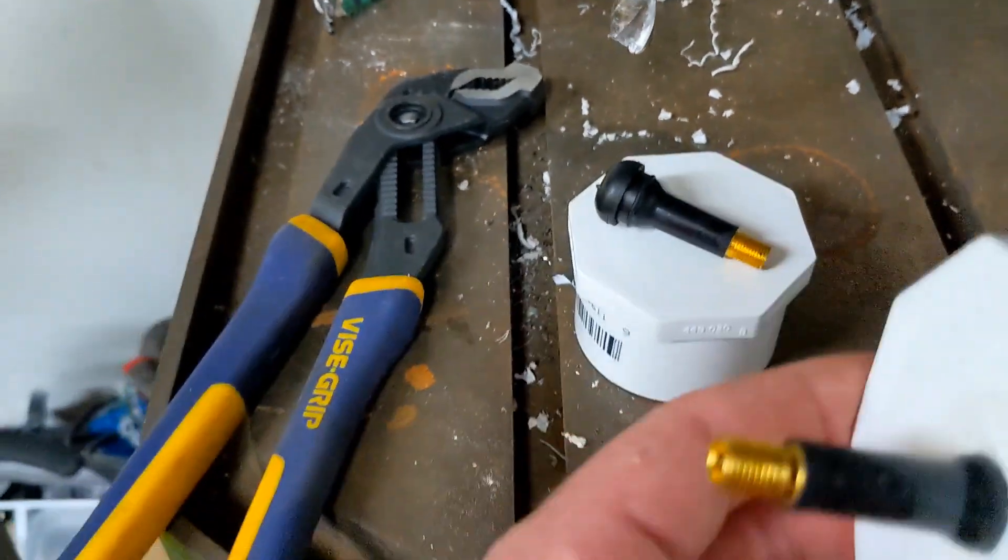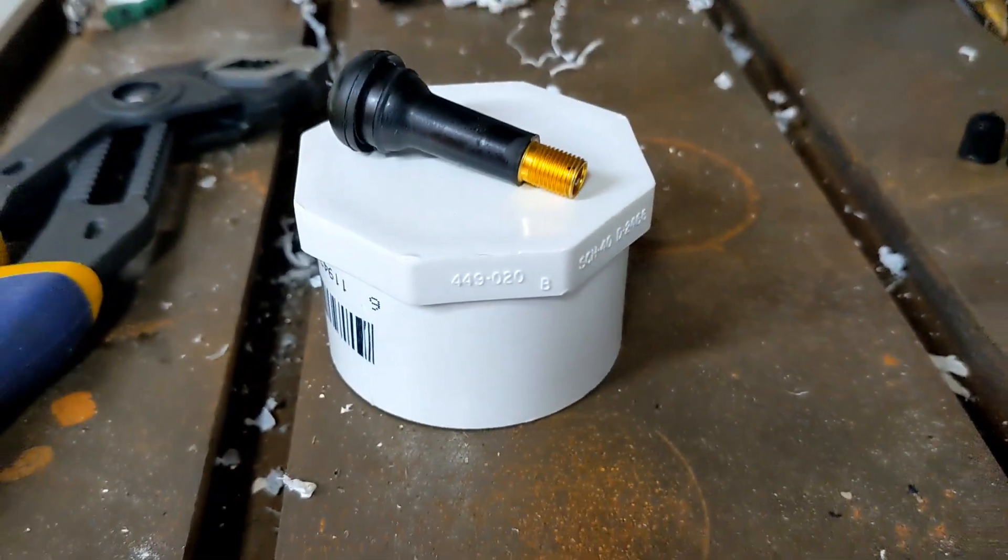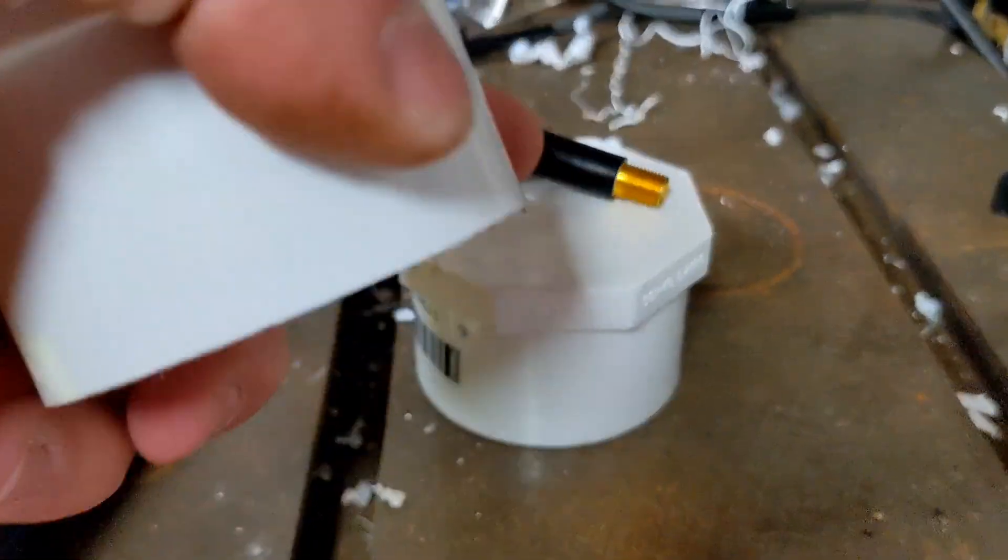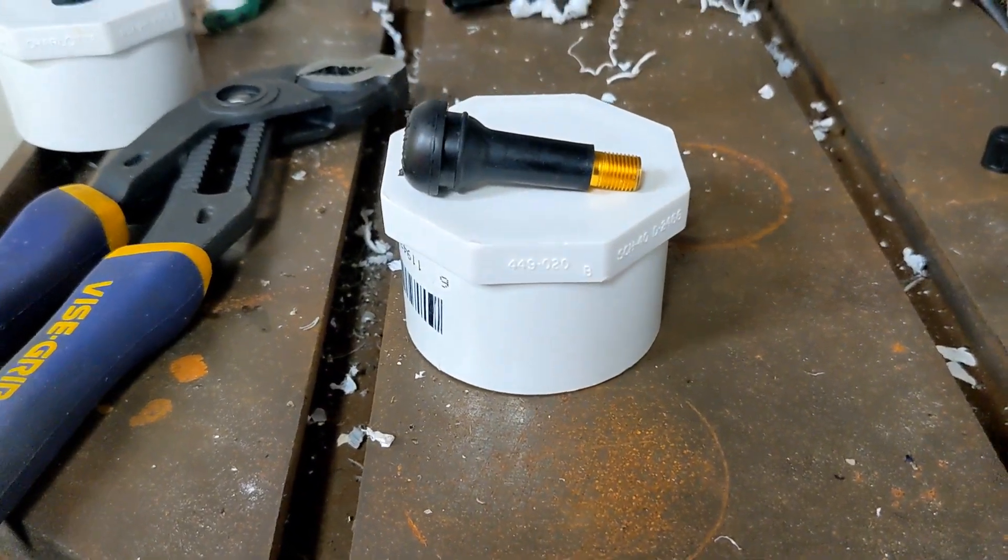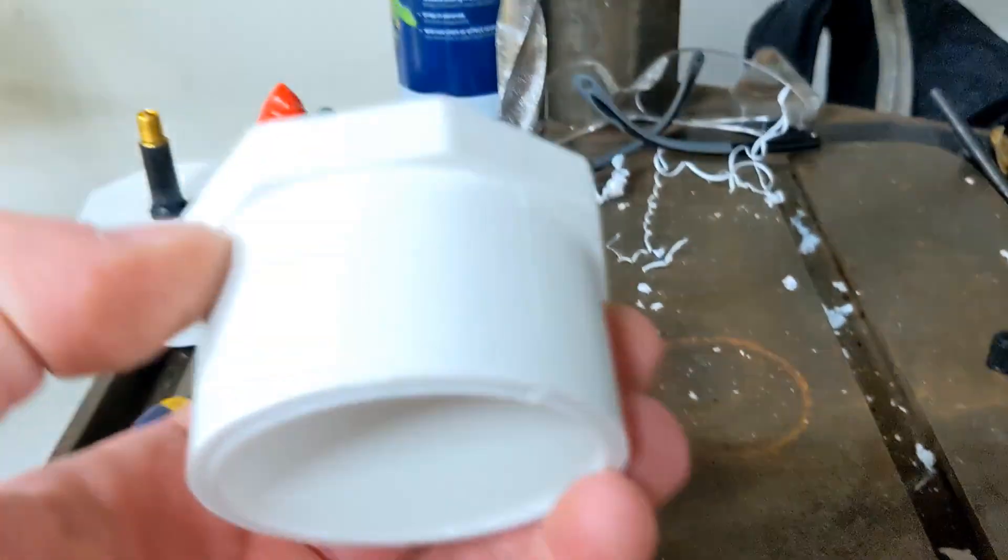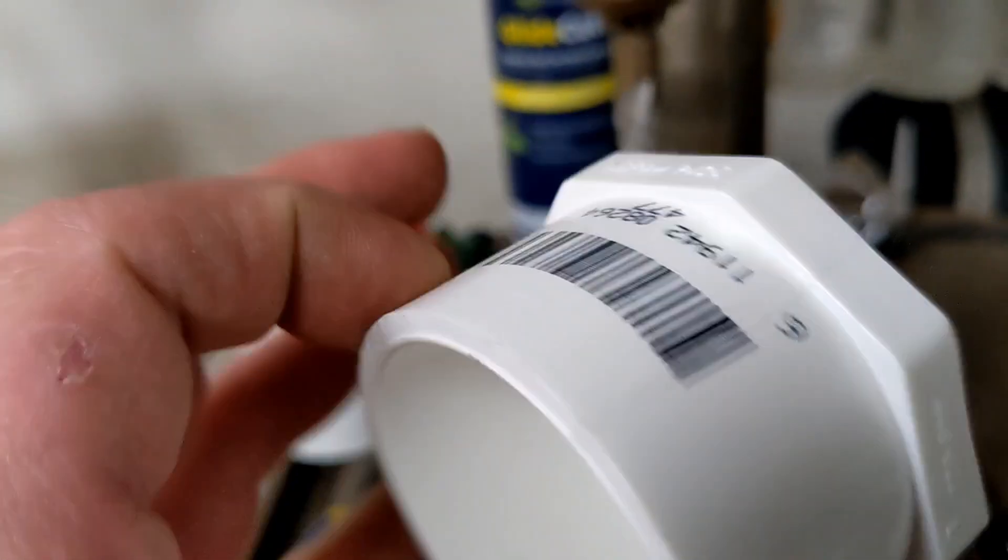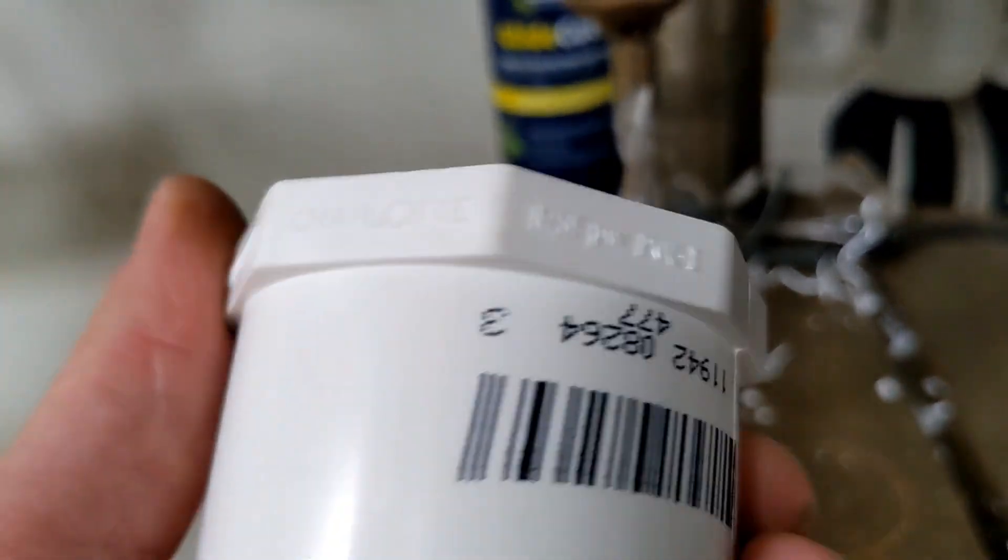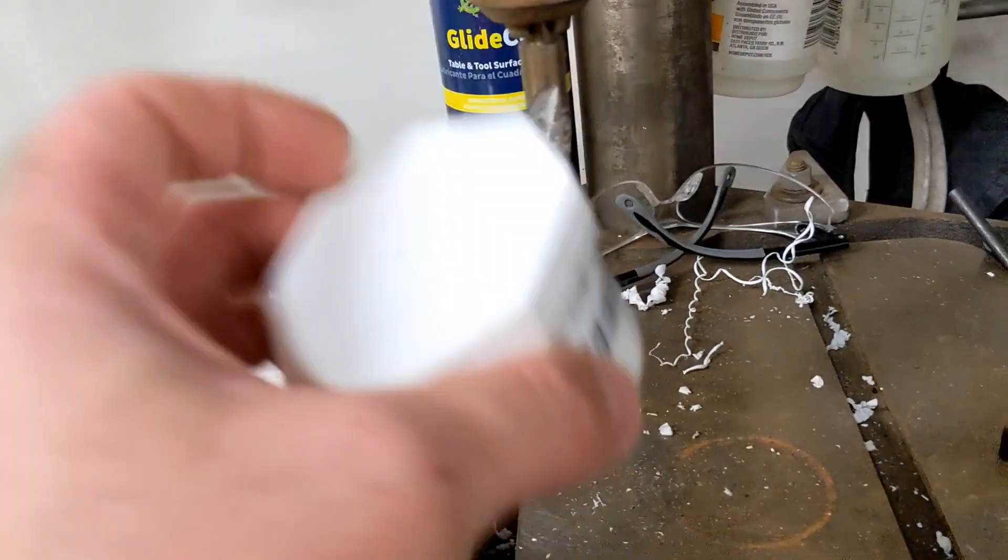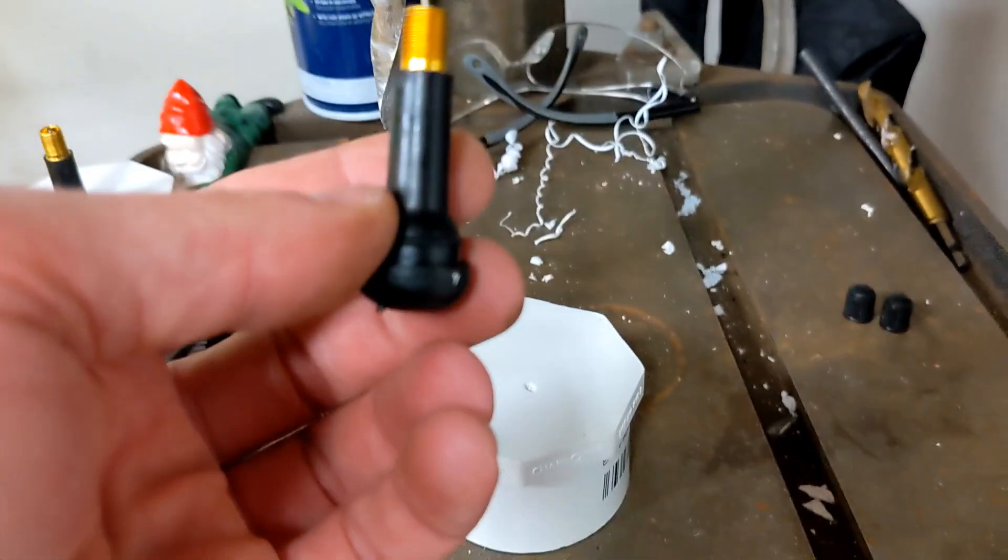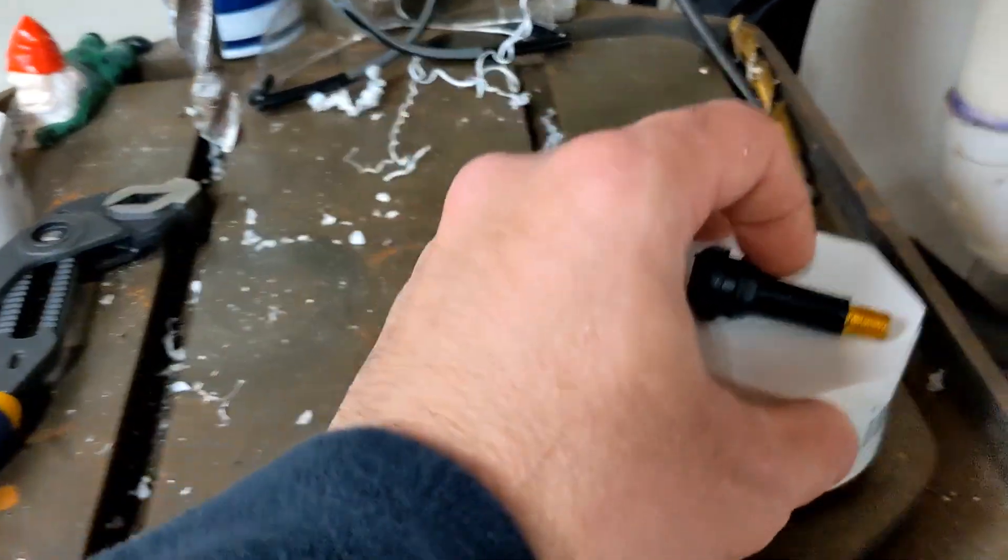Basically, all you need - and it depends on what vehicle you're making this for - this is specifically for a Duramax. You need a two inch PVC plug, not a cap, a plug. I will put a link in the description to this as well as your standard valve stem.